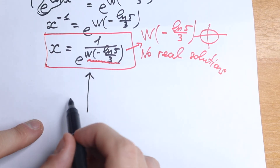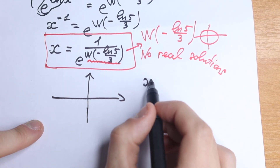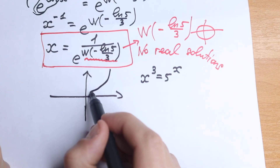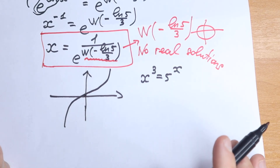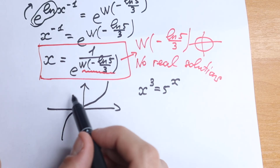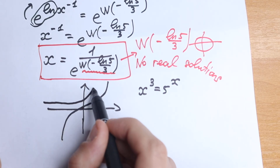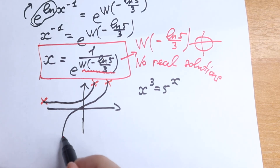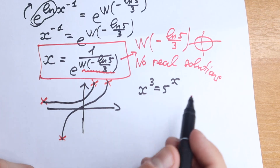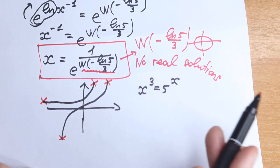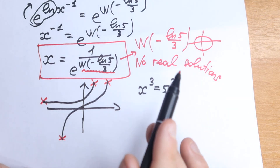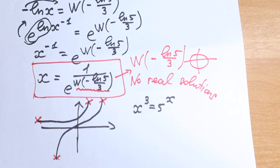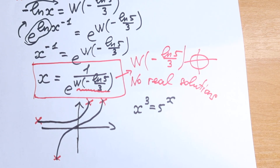Let's draw a graph to see how the functions look. We have x³ equal to 5 to the x. x³ is our cubic function — it looks something like this. And 5 to the x is our exponential function — it looks something like this. These lines do not intersect, so no real solution. This function does not intersect, so there is no common point of intersection and no real solution — maybe a complex one, but in the real plane we don't have these roots.